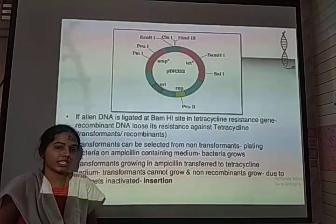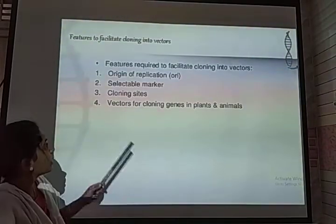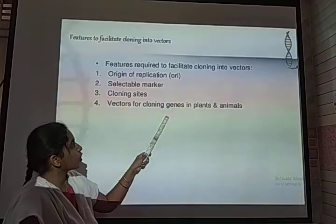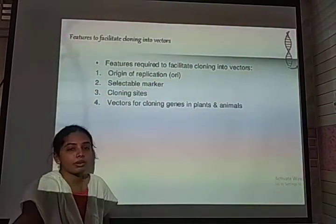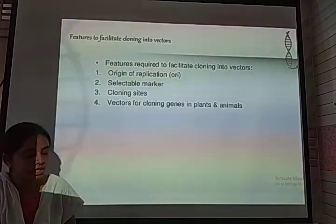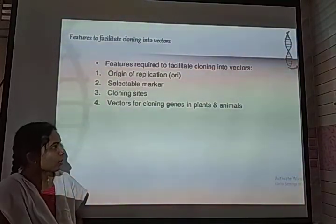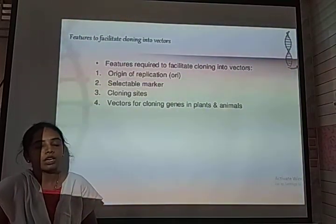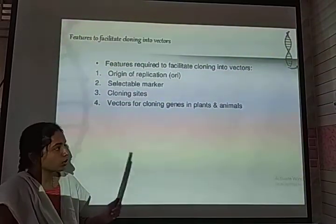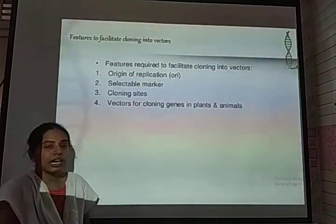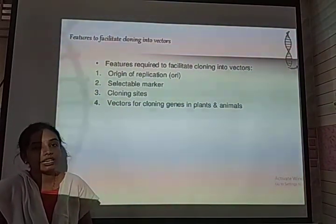Another feature is vectors for cloning genes in plants and animals. The vector commonly used in plants is called Ti plasmid — tumor-inducing plasmid — extracted from a microbe called Agrobacterium tumefaciens. It causes pathogenic properties to plant cells. In animals, retrovirus vectors are used to transfer genes.